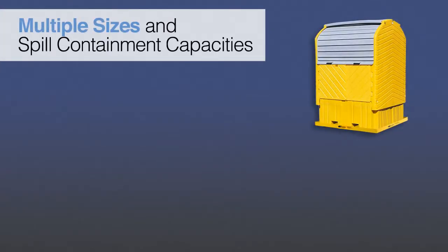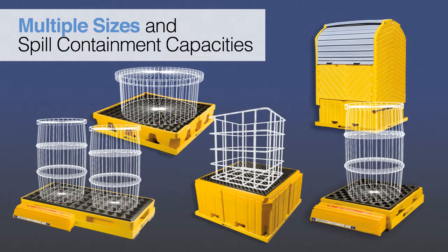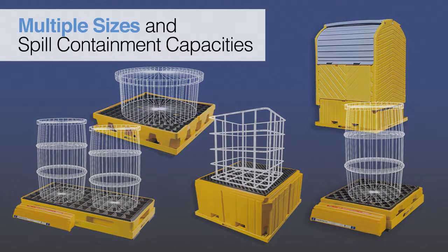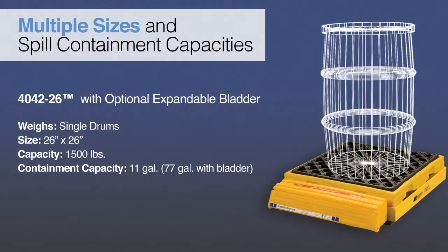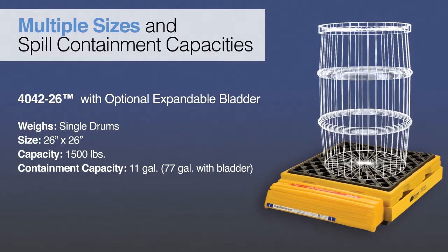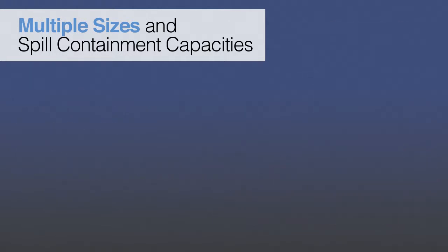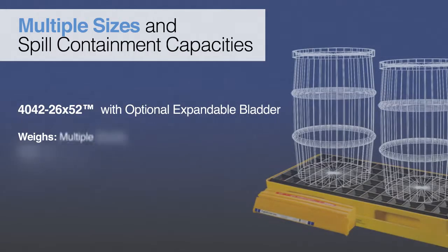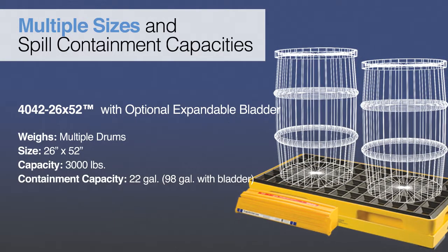Scaletron is the only company to offer a complete line of spill containment scales with multiple base sizes and containment capacities. From drums to tanks to IBC totes, our scales handle a wide range of chemical weighing applications. The product line includes a 26-inch by 26-inch single drum scale available with an optional expandable bladder, and a 26-inch by 52-inch size that can weigh multiple drums, also available with an optional expandable bladder.